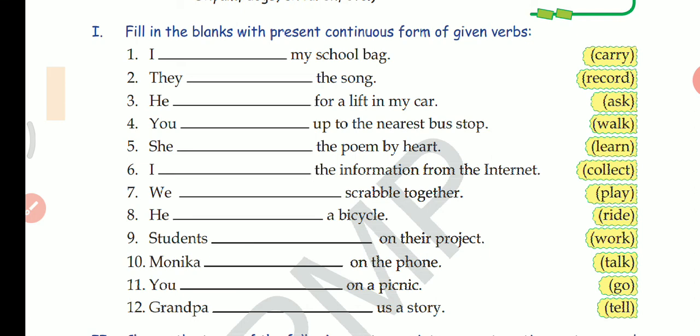Third: He dashed for a lift in my car. He is singular, so he is asking for a lift in my car. Fourth: You are walking up to the nearest bus stop. She is learning the poem by heart. And similarly you can solve this exercise. You just have to use is, am, or are and add -ing to the verb.